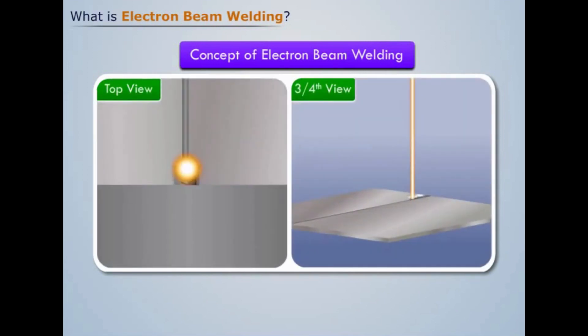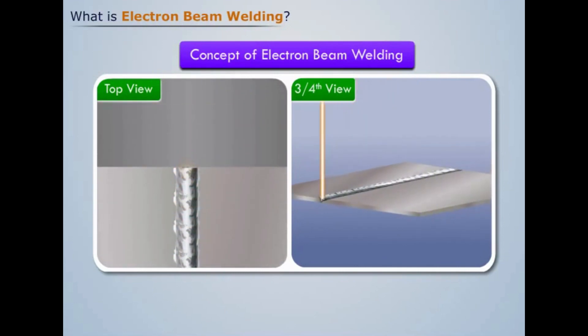But as the workpiece traverses, we see that the groove weld also traverses and the molten metal gets pushed back. After some time the molten metal cools to form a weld joint.